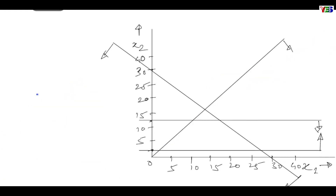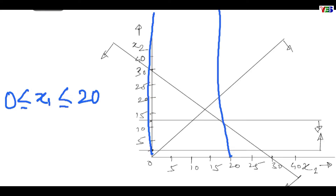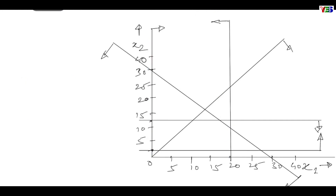One more constraint is x1 greater than or equal to 0 and less than or equal to 20. This gives us the x1 equal to 0 line and the x1 equal to 20 line. Since it is greater than 0, the arrow will be like this, and less than 20, so the arrow will be like this. Now we have completed the graph and drawn lines for all the constraints.